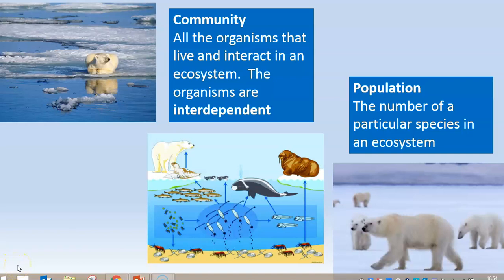It's how those living organisms work together that forms the community. So here we've got a walrus, a polar bear, some krill, some fish, some algae, and sea lions. Those are all the living parts of the ecosystem, and we call those the community. We can then focus down on one particular species in the community — for instance, the polar bears — and count how many are in that ecosystem. That would be referred to as the population.